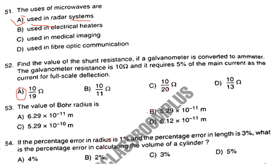Question number 53. The value of Bohr radius is Option B: 5.29 × 10⁻¹¹ meter. Question number 54. If the percentage error in radius is 1% and the percentage error in length is 3%, what is the percentage error in calculating the volume of a cylinder?